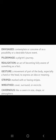Now let's go through some important words and their meanings which have been used in this chapter. Envisaged means to contemplate or conceive of as a possibility or a desirable future event. Pilgrimage means a pilgrim's journey. Realization means an act of becoming fully aware of something as a fact. Gesture means a movement of part of the body, especially a hand or the head, to express an idea or meaning.